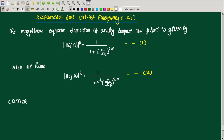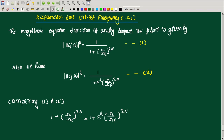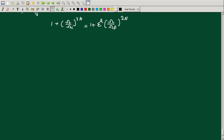Comparing and equating equations 1 and 2: 1 plus (ω/ω_c)^(2N) equals 1 plus ε² × (ω/ω_p)^(2N). Simplifying, ε² × (ω/ω_p)^(2N) equals (ω/ω_c)^(2N). Now let's examine this relation.